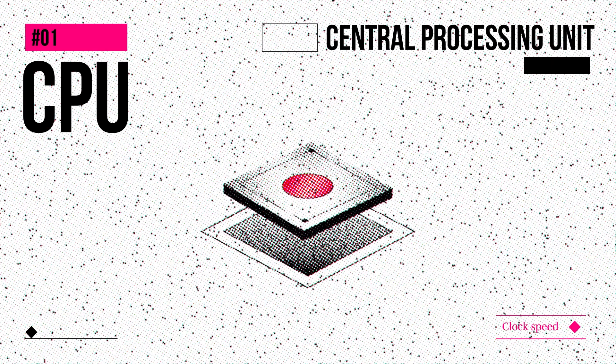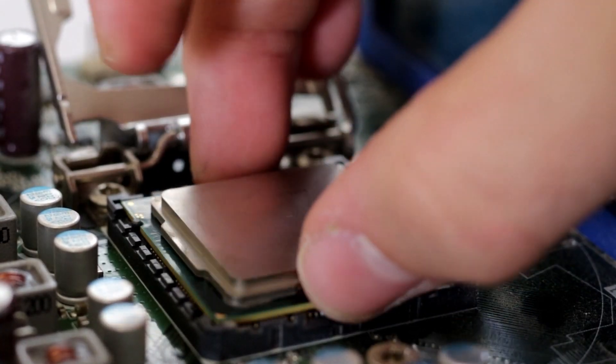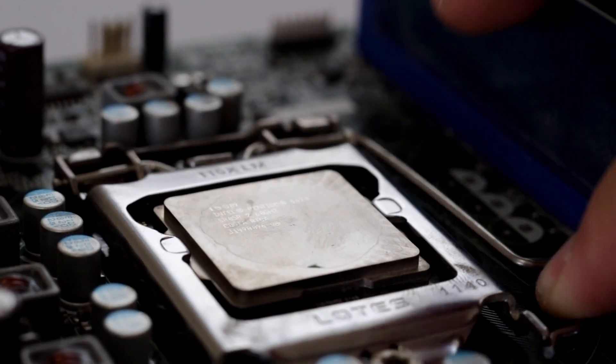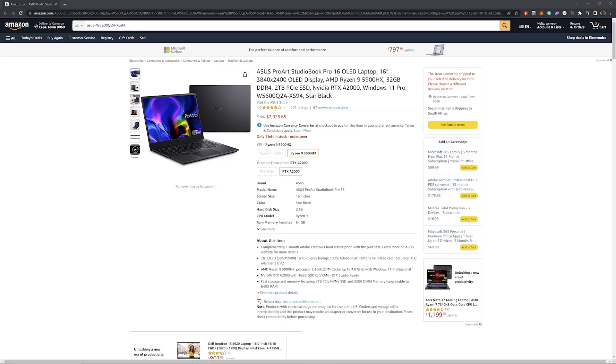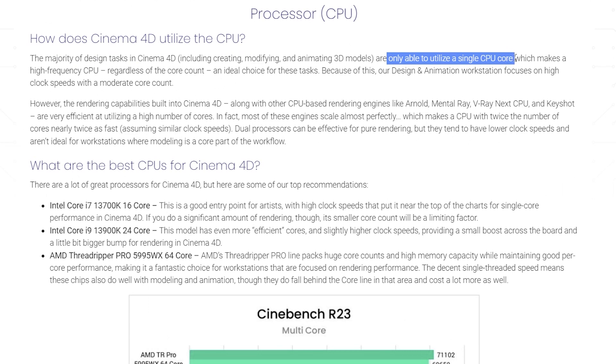First, the CPU. To massively oversimplify, CPUs have cores, and when buying you'll often see clock speed — this is the speed of each core. Programs like After Effects and even Cinema 4D only utilize a single core, so arguably the most important factor here is clock speed, not the number of cores.